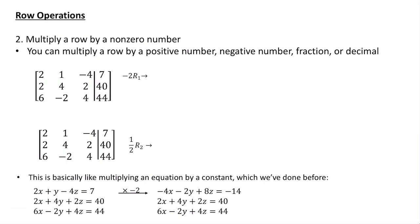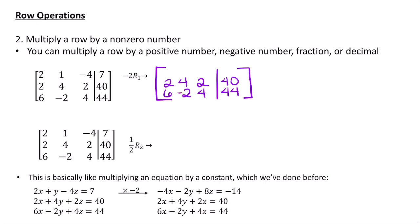The second row operation is multiplying a row by a non-zero number — positive, negative, fraction, or decimal. For example, suppose we want to multiply row 1 by negative 2. I start by writing the rows that don't change: rows 2 and 3 stay the same. Then for row 1, each element gets multiplied by negative 2: 2 times negative 2 is negative 4, 1 times negative 2 is negative 2, negative 4 times negative 2 is 8, and 7 times negative 2 is negative 14.